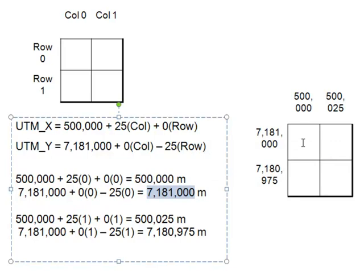We continue all the way down to column 1, row 1, where the X value would be 500,025 and the Y value would be 7,180,975. So every pixel had an original column and row number, and after applying this model, every pixel has a UTM coordinate at the center of that pixel.